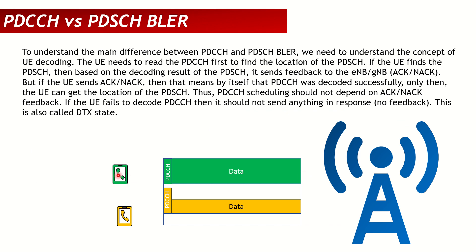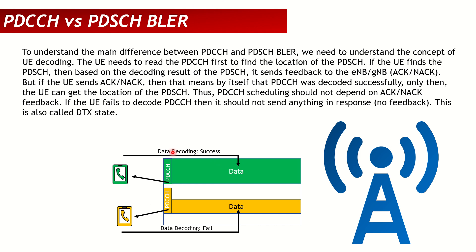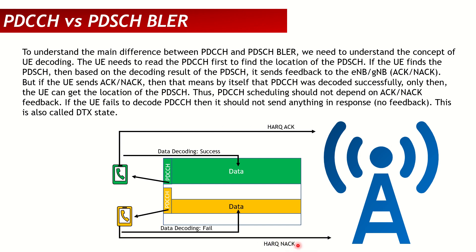Consider two users — a green user and a yellow user. The gNodeB sends their data, and each UE finds where its data is allocated by reading the PDCCH. The PDCCH tells each UE where its data is located. Once they find this, they go and read the data. If one UE decodes the data successfully it sends a HARQ ACK, while the other, unable to decode, sends a HARQ NAK to the gNodeB.